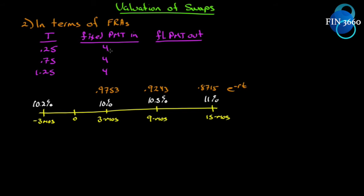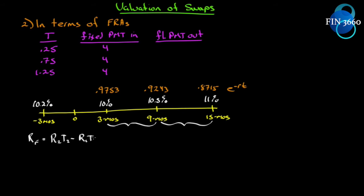We already know our fixed payments: four, four, and four — that's easy enough. Then we need to know our floating payments. The fixed payments we'll receive, but how much is going out? To do that we're going to need some forward rates. We'll need this one and this one, and we've already seen how to calculate them. The formula for the forward rate is: rf = (r2·t2 − r1·t1) / (t2 − t1).